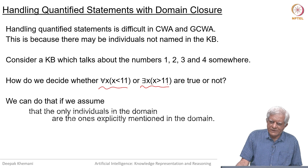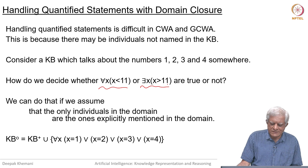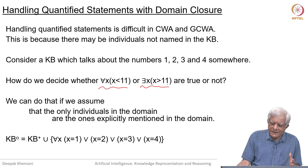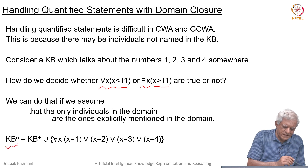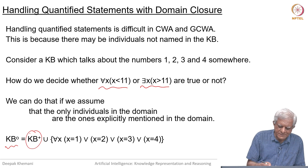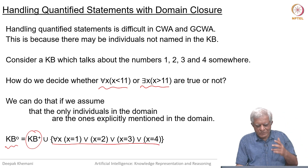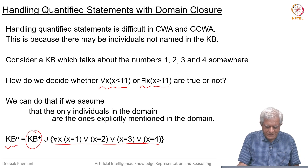If we assume that the only individuals in the domain are those stated explicitly — which is the spirit of the closed world assumption — then we can make such statements. This is called the domain closure axiom, and we extend KB-plus with domain closure statements. For a domain of four elements, this statement says: for all x, either x equals 1, or x equals 2, or x equals 3, or x equals 4.